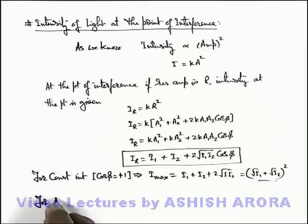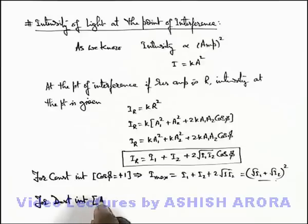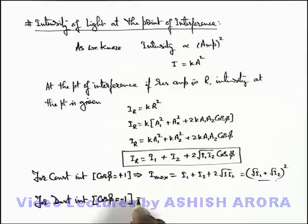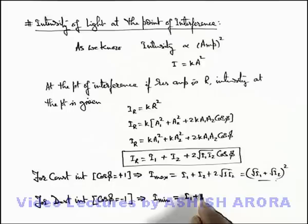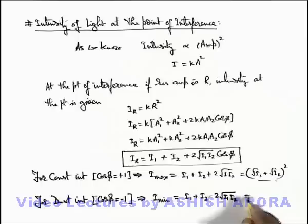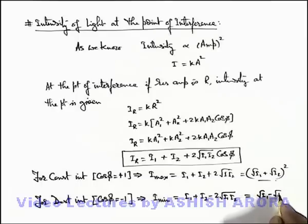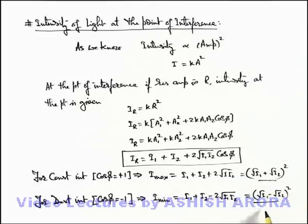Similarly, for destructive interference, where the waves superpose in opposite phase, the value of cos(φ) equals minus 1. This implies the intensity at the point of destructive interference is minimum, given as i1 + i2 − 2·√(i1·i2), which rearranges to (√i1 − √i2)². So these are the maximum and minimum intensities at constructive and destructive interference points.